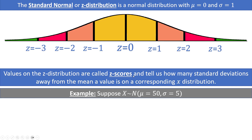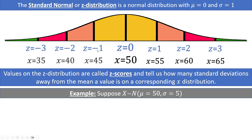For example, let's say that our distribution of X represents a normal distribution with a mean of 50 and a standard deviation of 5. If that's the case, we can place the values in the corresponding places on the normal distribution. The mean is 50, which corresponds to an X value of 50 right in the middle. Then we'll count by 5s going up: 55, 60, and 65, and counting down by 5s to the left: 45, 40, and 35.